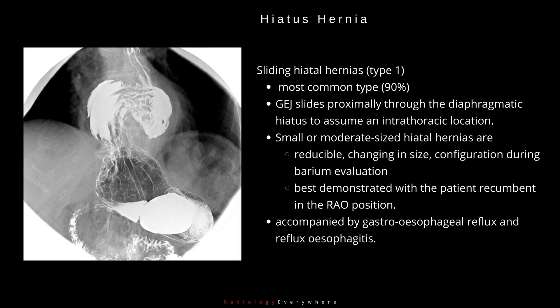Sliding hiatal hernias are the most common type, approximately 90%, and this is Type 1. The gastroesophageal junction slides proximally through the diaphragmatic hiatus and becomes an intrathoracic location. Small or moderate-sized hiatal hernias are often reducible, changing in size and configuration during barium evaluation, and are best demonstrated with the patient recumbent in the right anterior oblique position.